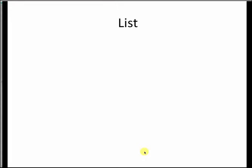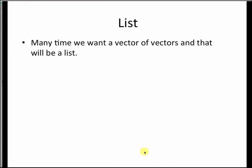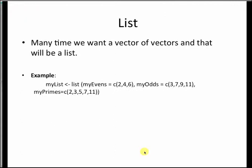Now let's look at lists. Many times we want a vector of vectors, and in that case we turn to what is called a list. A list is basically a vector of vectors. If I want to define a variable called my_list, I assign it using the list command. The first element is named my_evens and is a vector of 2, 4, 6. The second vector is named my_odds with values 3, 7, 9, and 11. The third vector is my_primes with values 2, 3, 5, 7, and 11.